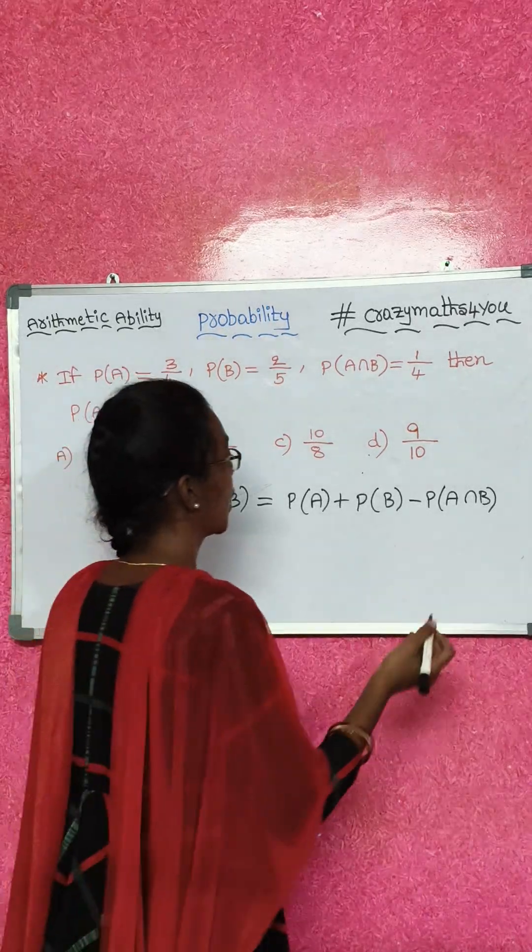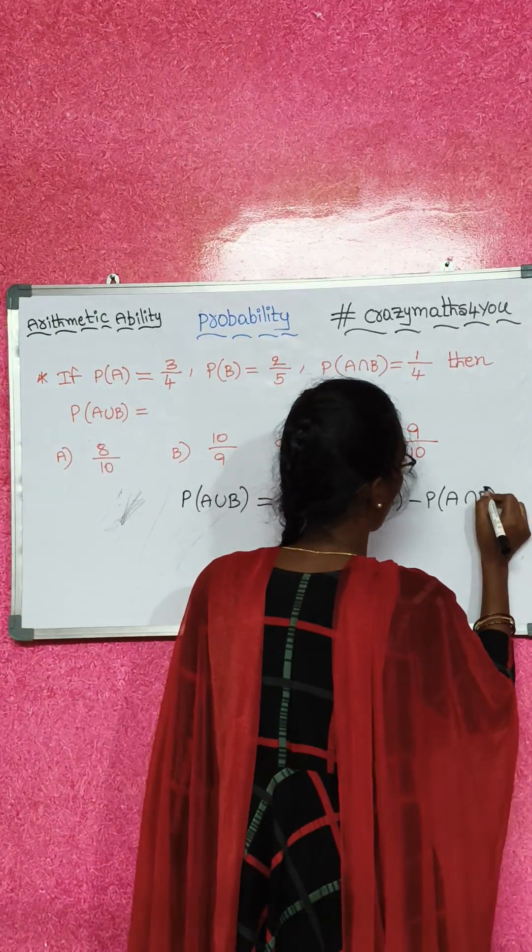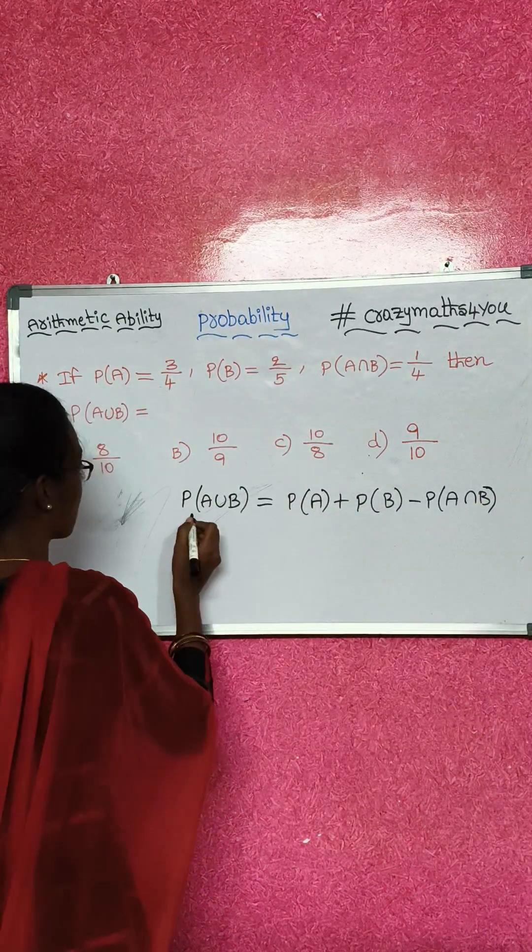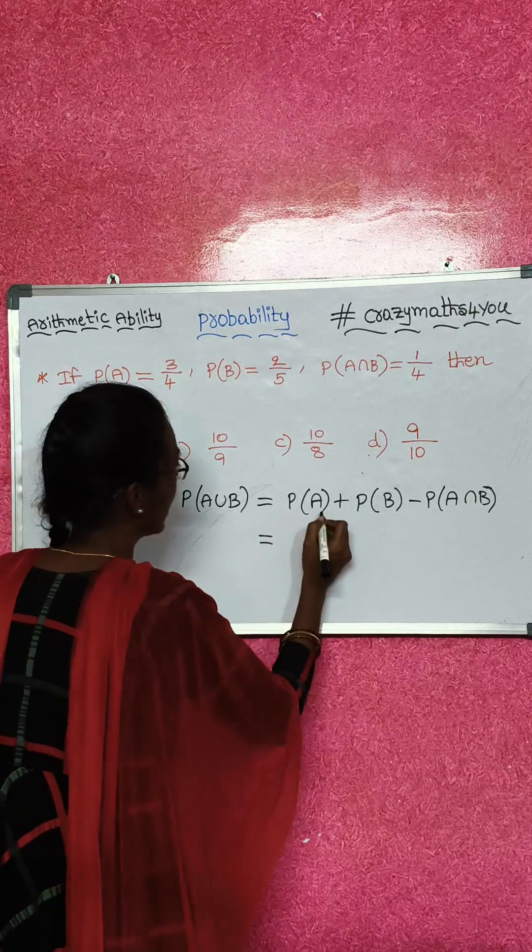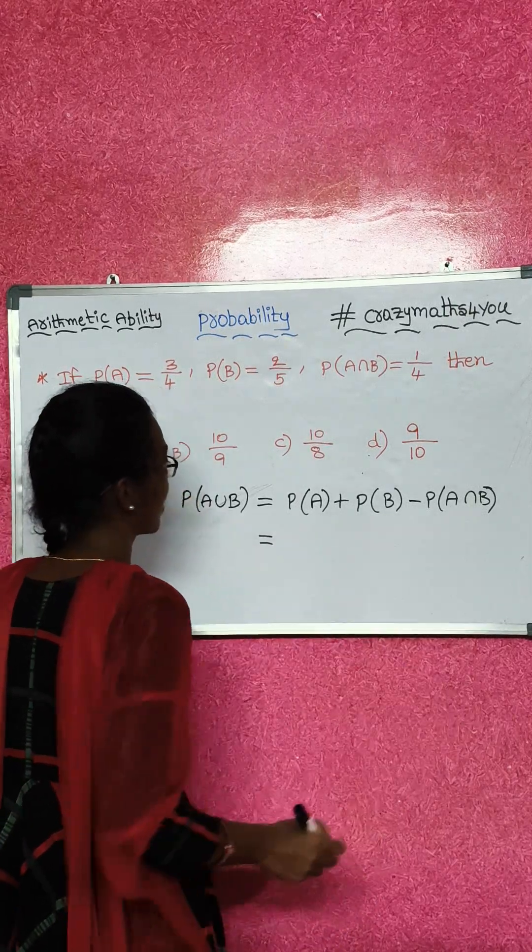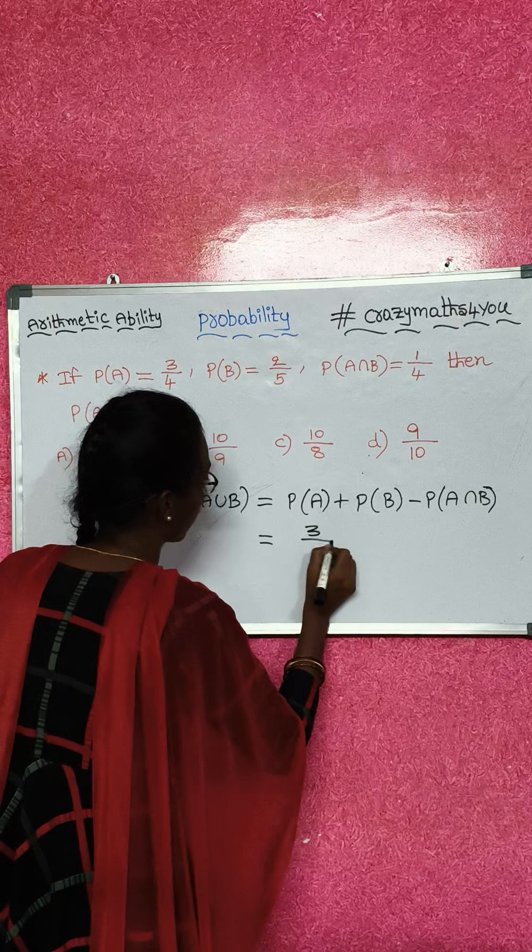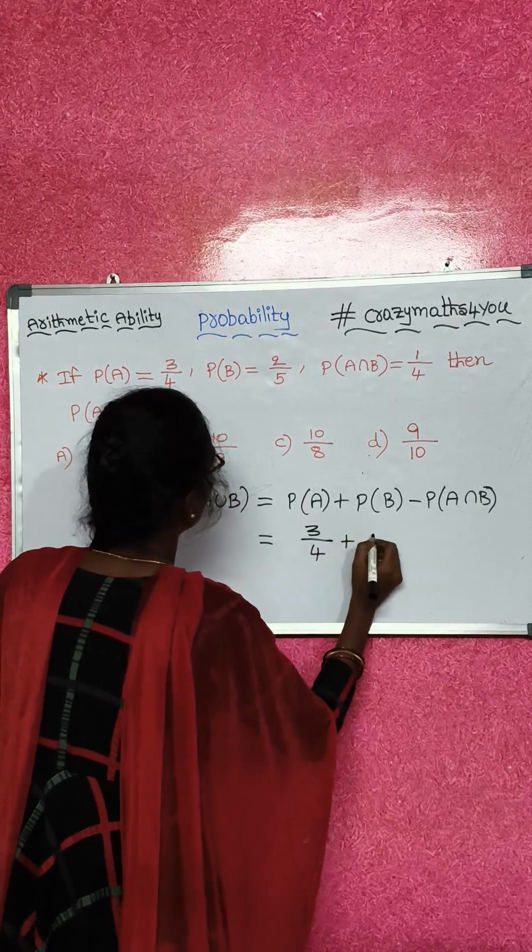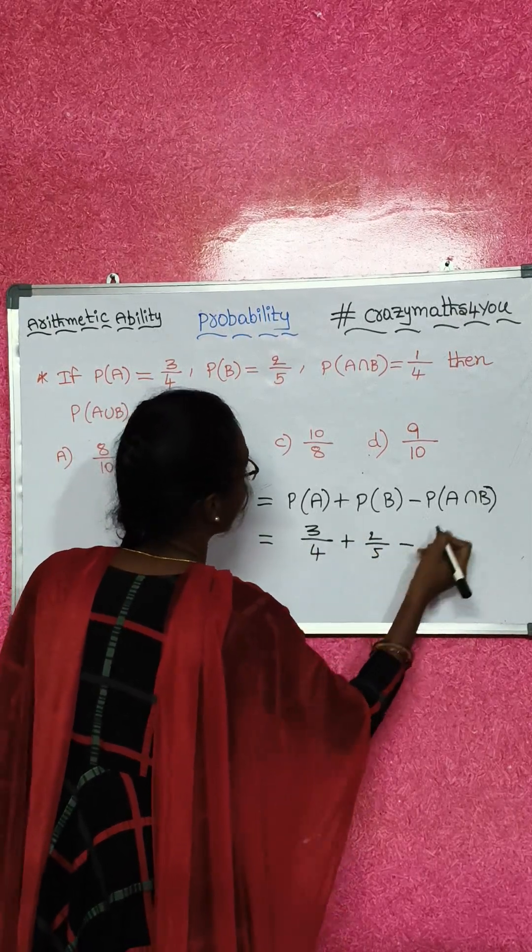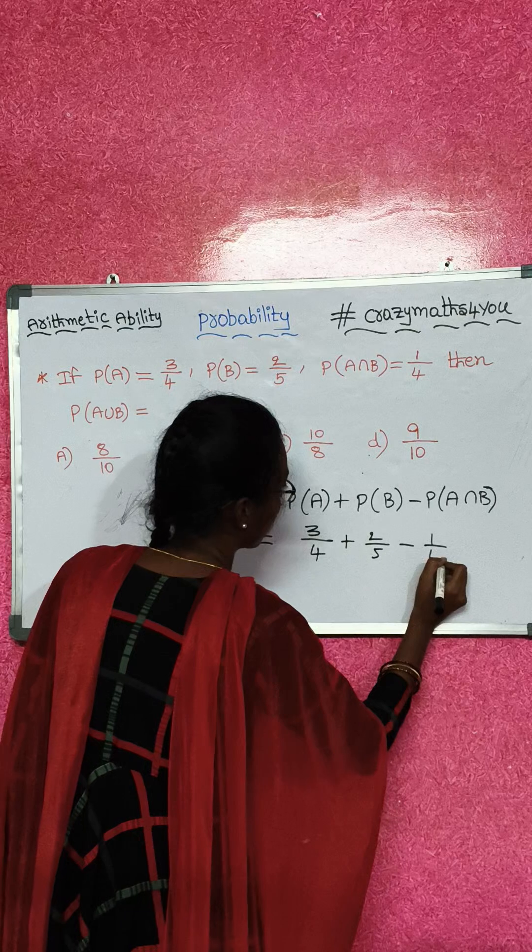What formula? Addition of probability. Sum of probabilities. P(A∪B) equals A value, B value. Now substituting the values: 3/4 plus 2/5 minus 1/4.